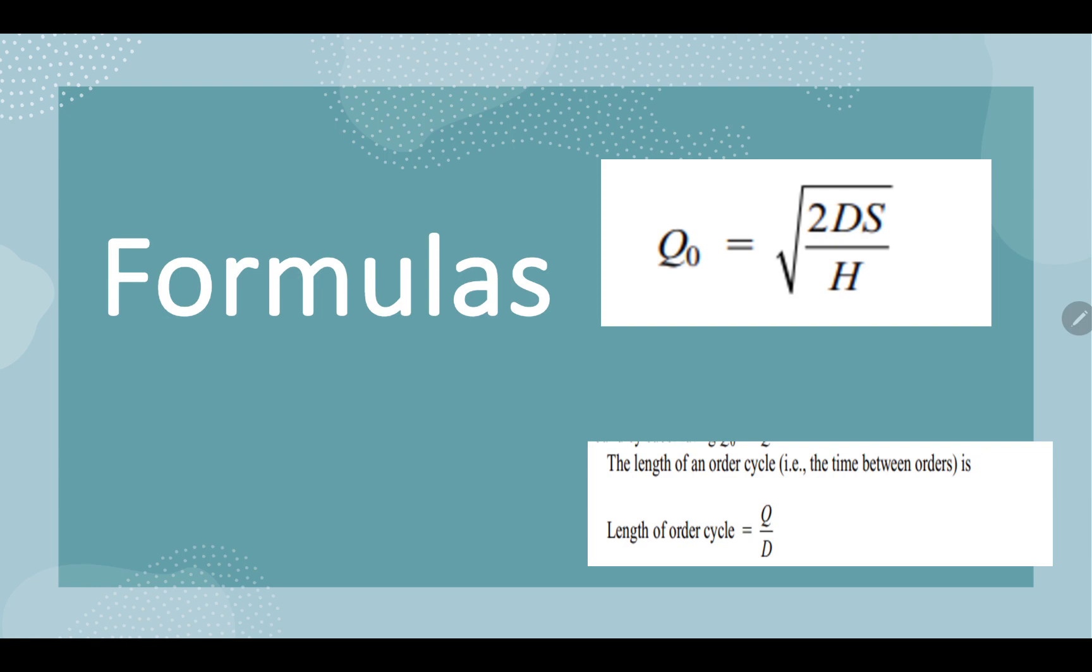There is another formula, the length of the order cycle. Length of the order cycle is how much time has gone between two orders. Like today you have ordered and received the order, when will the next order be placed? That time period is known as length of an order cycle. You will multiply by number of days in a year, which will be most of the time specified in the question. Otherwise, you can take it as 360 or 365.